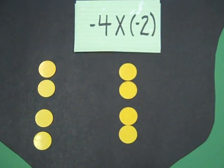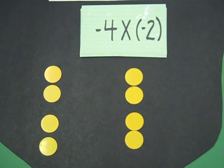That's how we would show concretely how to multiply integers using double-sided chips.